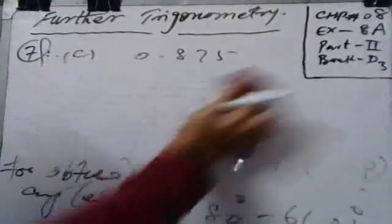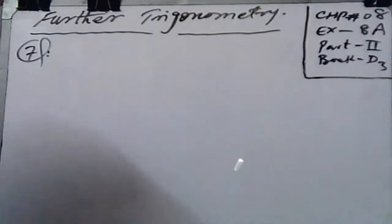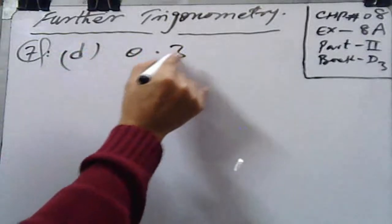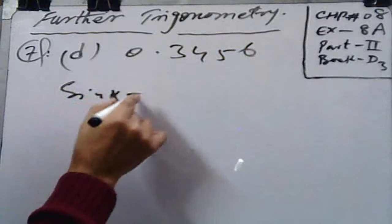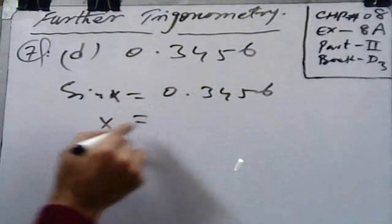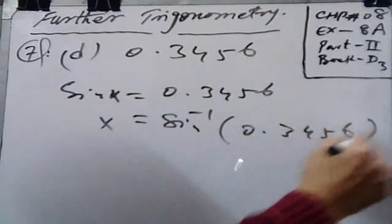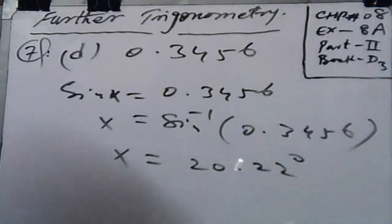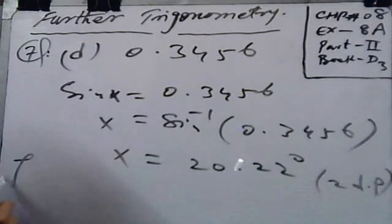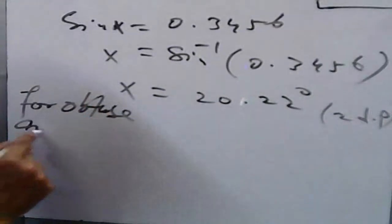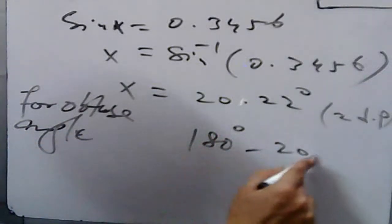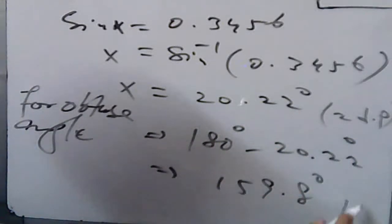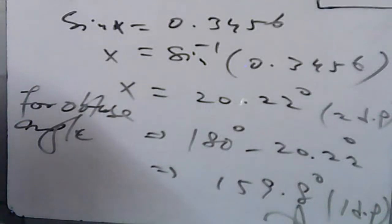Coming to part d with 0.3456: sin x is equal to 0.3456. With the help of a calculator you get 20.22 degrees, up to 2 decimal places. But we need the obtuse angle, so subtract from 180. After subtraction you will get 159.8 degrees, up to 1 decimal place. That is your required result.